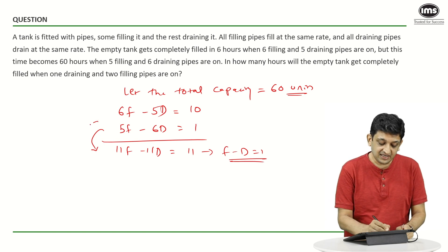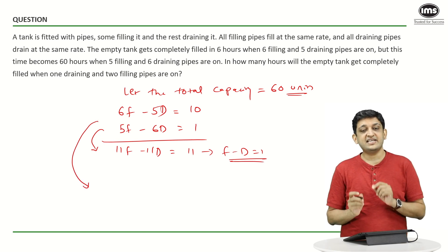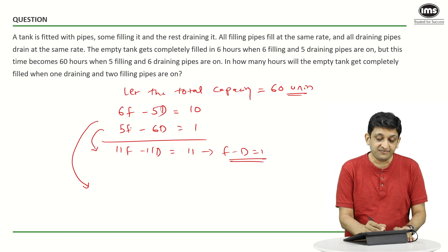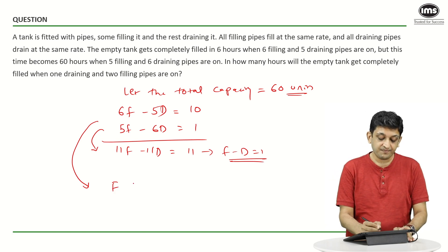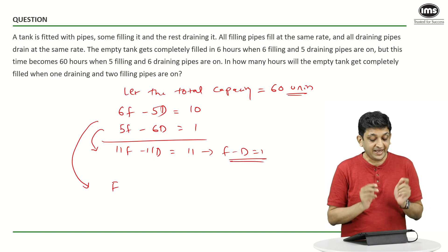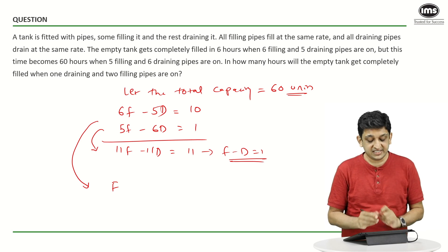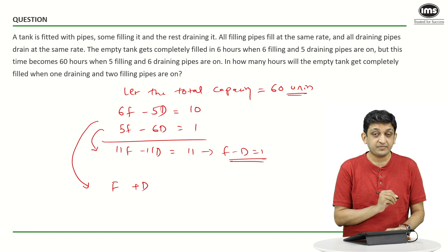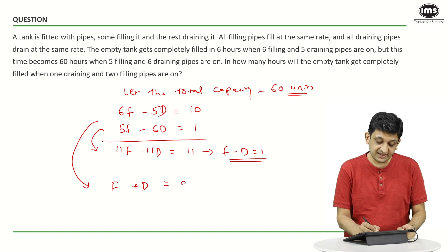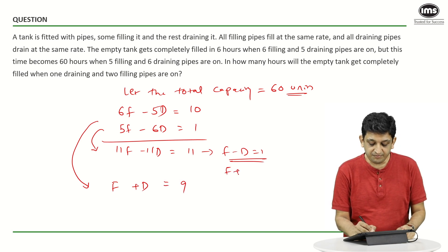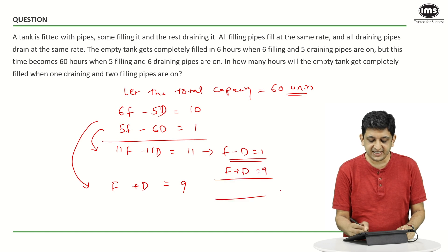In the second case, let us say I subtract the second equation from the first equation. So, 6F minus 5F will be F minus 5D minus of minus or plus 6D is going to give us plus D equals 10 minus 1 that is 9. So, we get F plus D equal to 9 as the second equation.